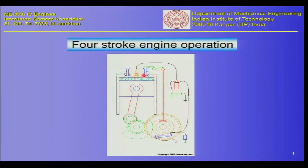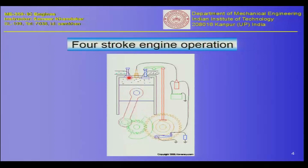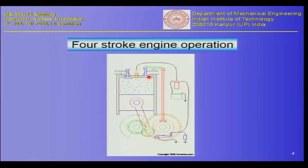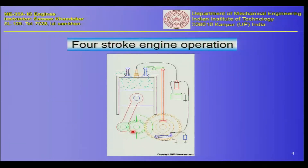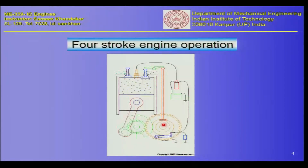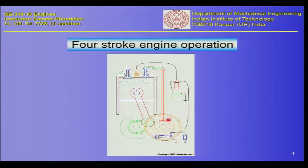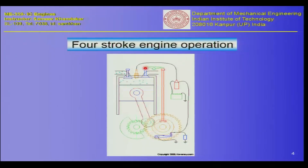Here you see two distinct types of valves: one is an inlet valve and one is an exhaust valve. The exhaust valve is operated by the camshaft. At a particular position of the crankshaft, the cam pushes this push rod up, and this push rod eventually pushes the exhaust valve down.